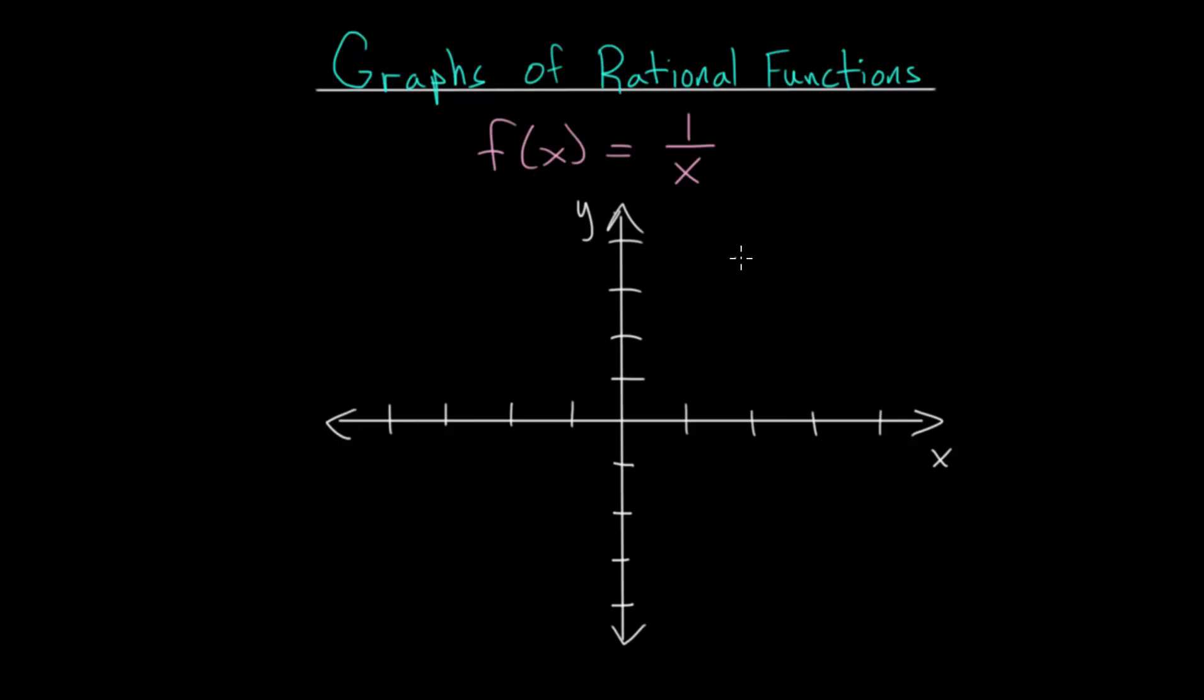After we analyze this, we'll look at the graph of 1 over x squared and see if we can notice any patterns if we continue increasing the exponent in the denominator to maybe 3, 4, 5, or so on. Before we get into that, let's just focus on this simple one here, 1 over x.